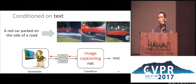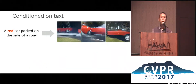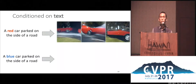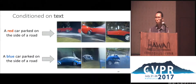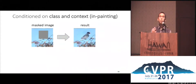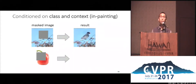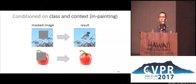For example, a red car parked on the side of a road. Now, if we change from red to blue, the images change to reflect the blue cars. Finally, we demonstrate the system on the task of in-painting, or filling in missing pixels, by conditioning on both the class and the context region.